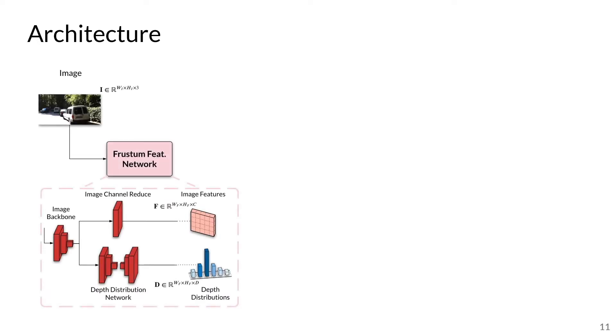The architecture of CADIN is as follows. Taking an image as input, we predict both image features F and depth distributions D using convolutional networks. Each feature pixel is multiplied with its associated depth probabilities via an outer product, projecting our image representation into our 3D frustum grid G.